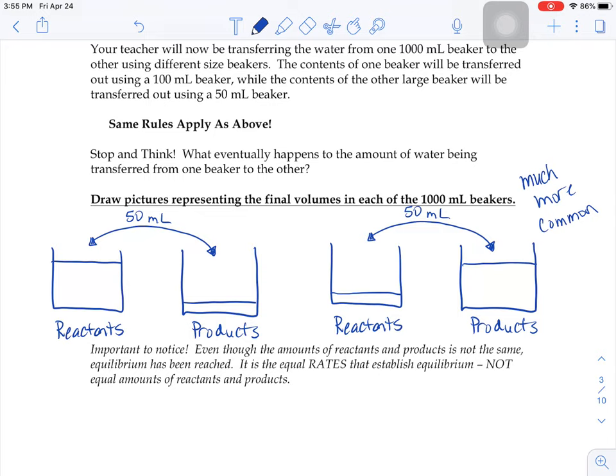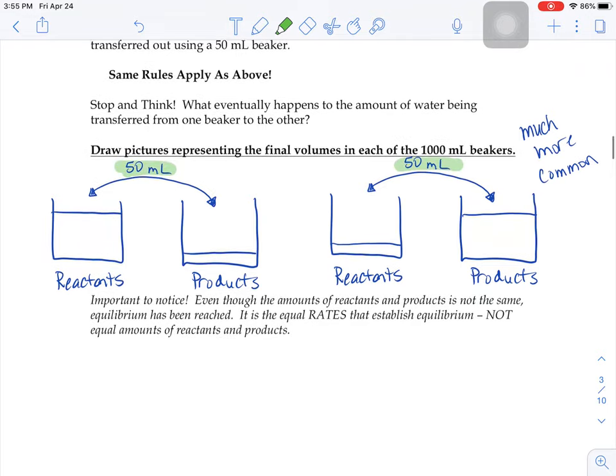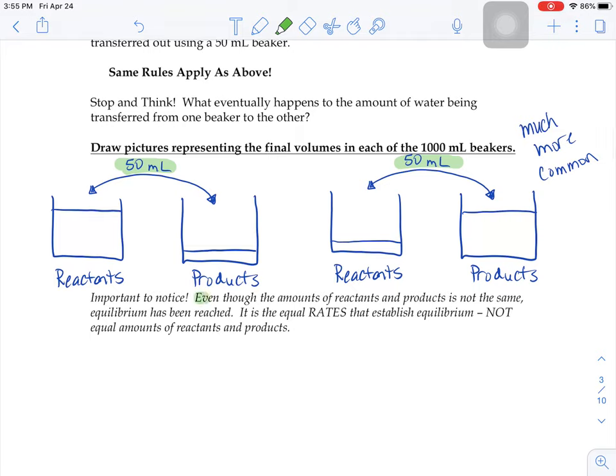The amounts of reactants and products don't matter. It's are the amounts being passed back and forth the same. That's what makes something at equilibrium. So that's what it says here. Even though the amounts of reactants and products in those beakers is not the same, we're still at equilibrium.